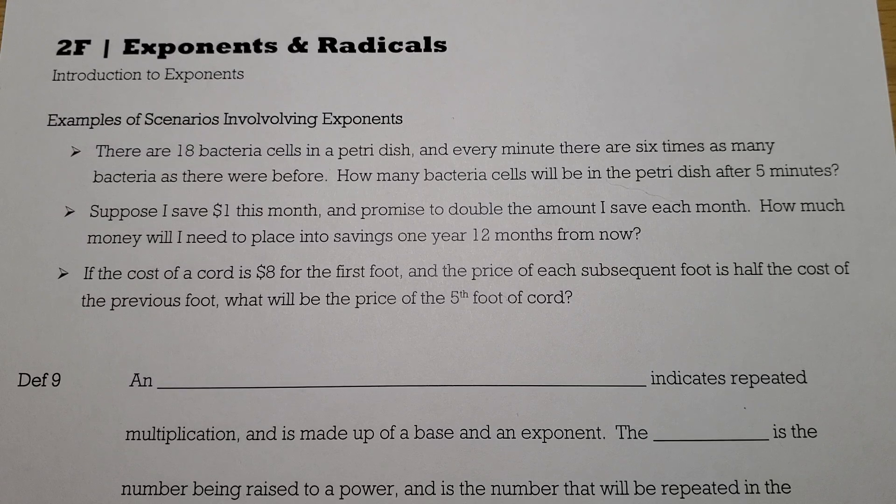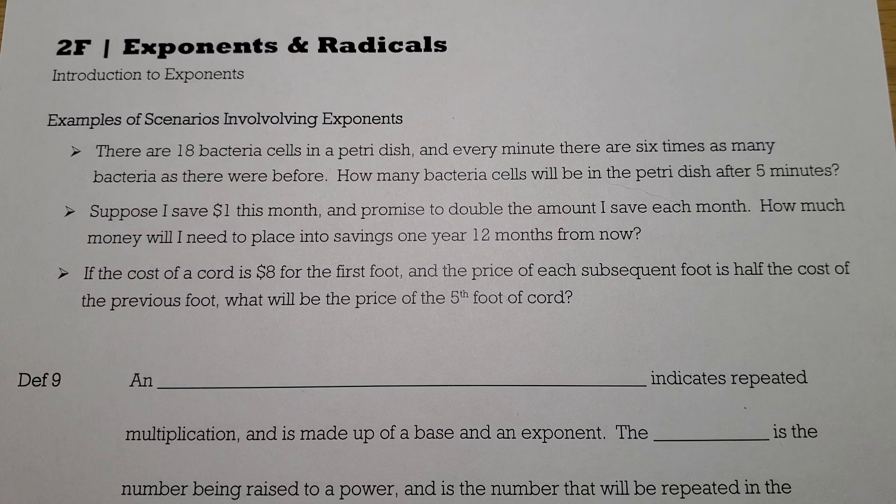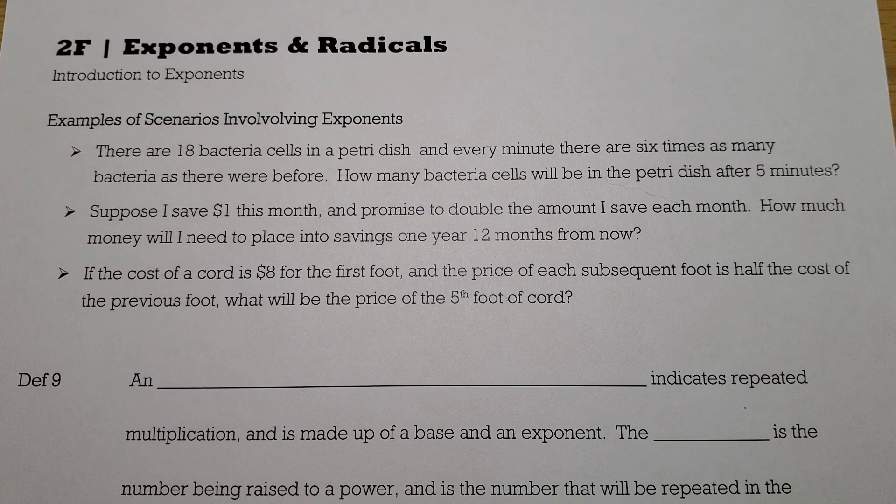Or let's say you're buying something, and the cost of a cord is $8 for the first foot of length, and then the price of each subsequent foot is half the cost of the previous foot. So for the first foot, it costs you $4. The next foot is half of that, so $4. The next one is half of that, so $2, and then $1, and so on. So maybe we want to know what the price of the fifth foot of cord is going to be.